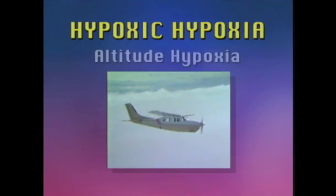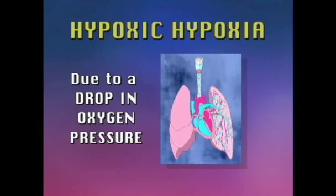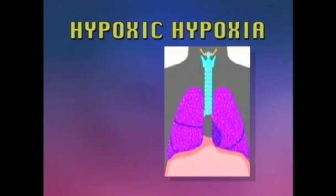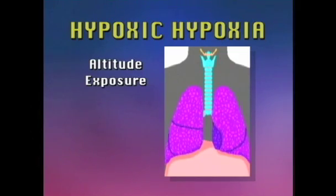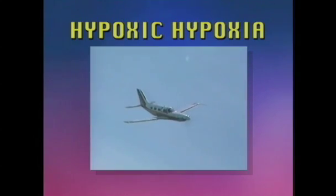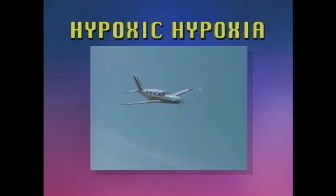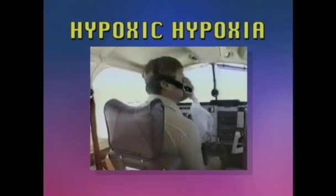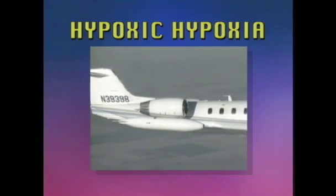Hypoxic hypoxia is the most common form of hypoxia in aviation and occurs due to a drop in oxygen pressure at the lung level. It can be caused by a decrease in the pressure of oxygen in the inspired air, which can result from altitude exposure, strangulation, or respiratory arrest. In the aviation environment, hypoxia can occur when flying an unpressurized aircraft above 10,000 feet. Other causes include failure of the aircraft oxygen systems, improper use of that equipment, or failure of the pressurization system.